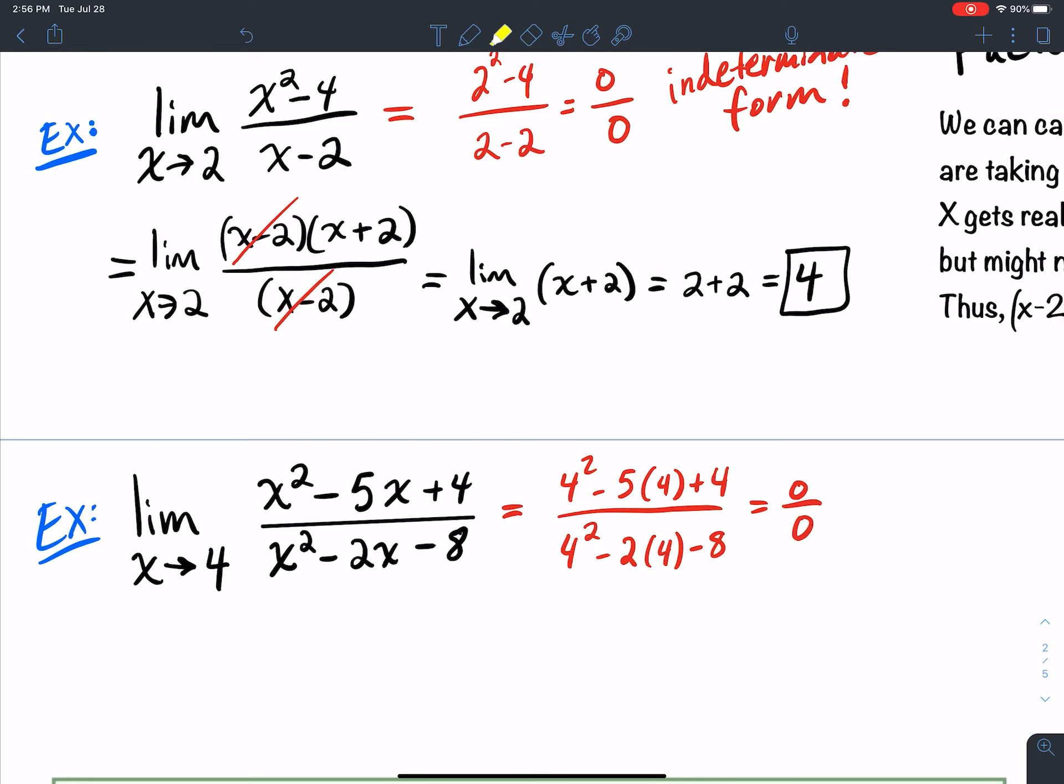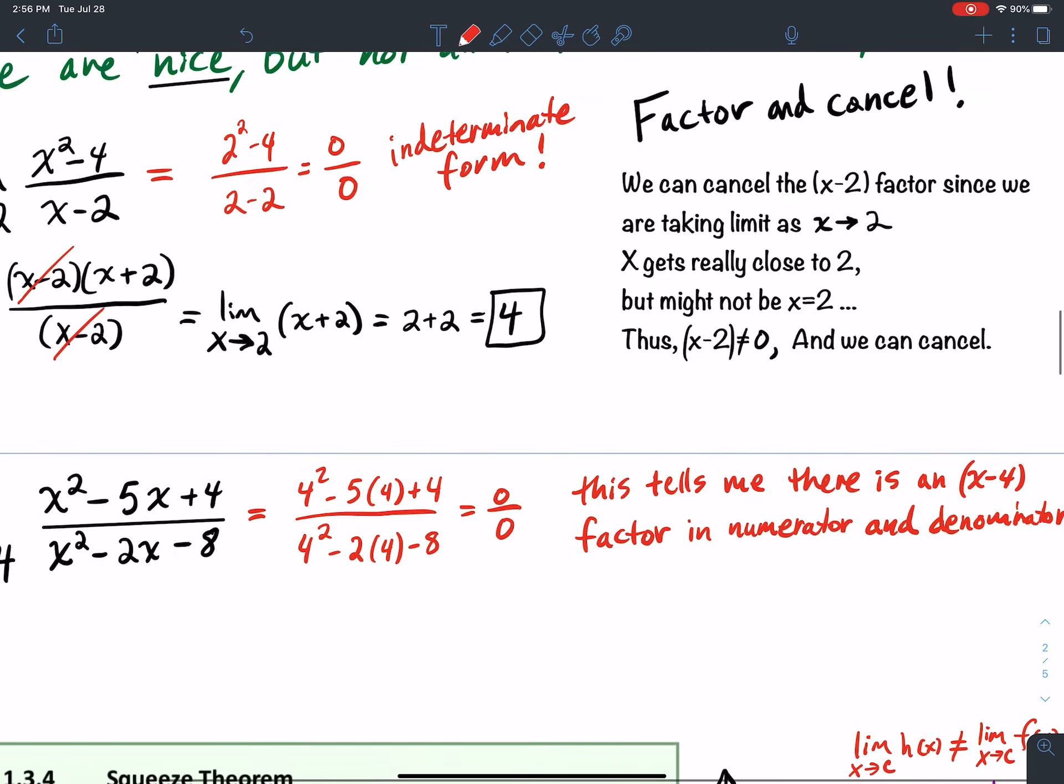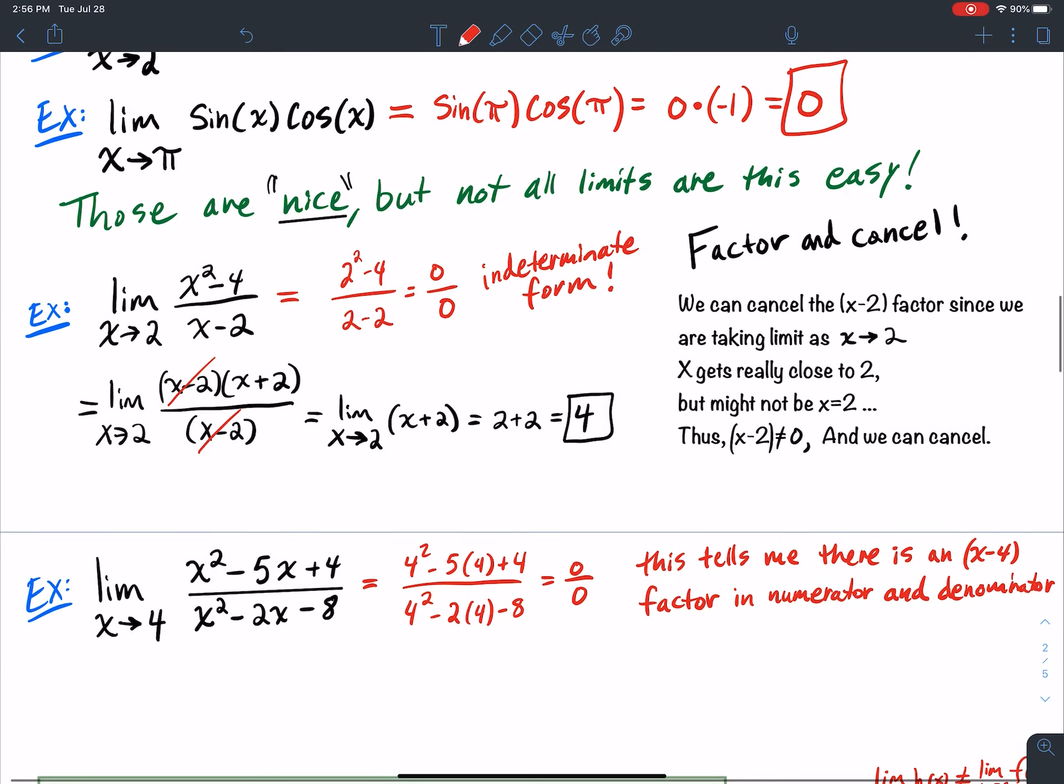So what is this telling me? It's telling me that I was probably right to assume that there was an x minus 4 factor in the numerator and the denominator. So we need to factor the numerator and the denominator. And once again, I encourage you to go to section 1.5 in the college algebra notes if you're having trouble factoring trinomials. And so that's just summarizing what I just said there. There's that x minus 4 factor going on.